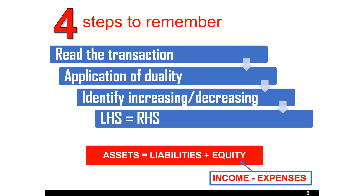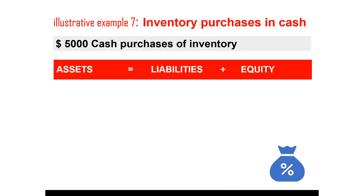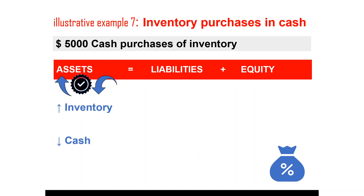Let's continue with the transaction analysis. We have already discussed six examples in the previous tutorial, so let's move to illustrative example number 7: inventory purchases in cash, paid $5,000. Inventory is an asset and normally falls under the current asset category. Inventory increases and cash asset decreases as the entity pays cash to purchase inventory stocks. The accounting equation records increase in inventory by $5,000 and decrease in cash asset by $5,000.